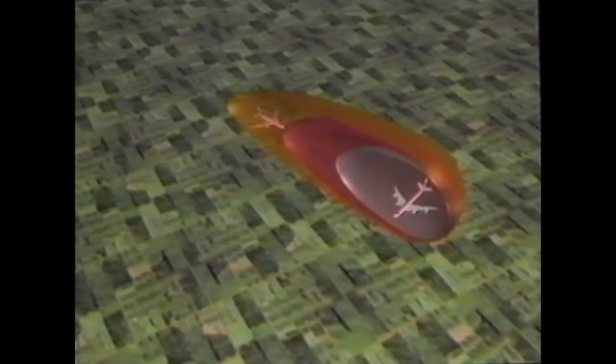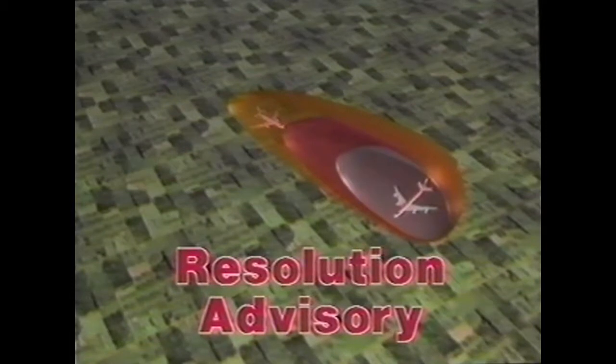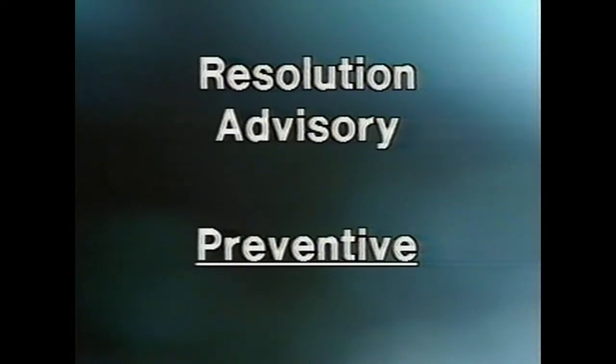L'avis de trafic est présenté à l'équipage pour l'assister dans la recherche visuelle de l'intrus et le préparer à un possible avis de résolution. Il est important de souligner que des manœuvres d'évitement basées uniquement sur les informations fournies par un avis de trafic ne sont pas autorisées. Si la recherche visuelle ne permet pas de localiser l'intrus et si ce dernier pénètre dans la zone d'alarme, le TCAS 2 génère un avis de résolution ou RA. Il existe deux types de RA : un avis de résolution correctif propose au pilote une manœuvre d'évitement dans le plan vertical ; un avis de résolution préventif indique une plage de vitesse verticale à éviter.